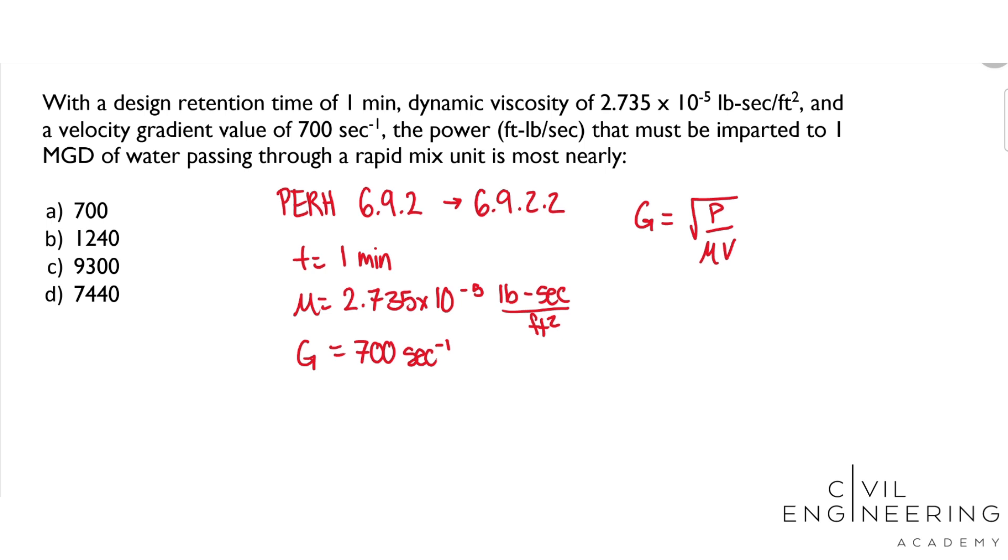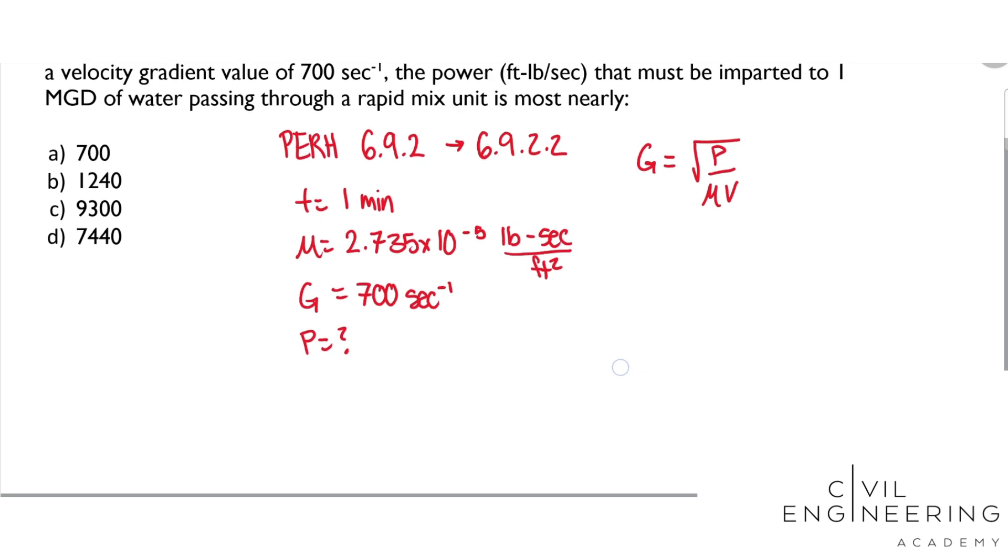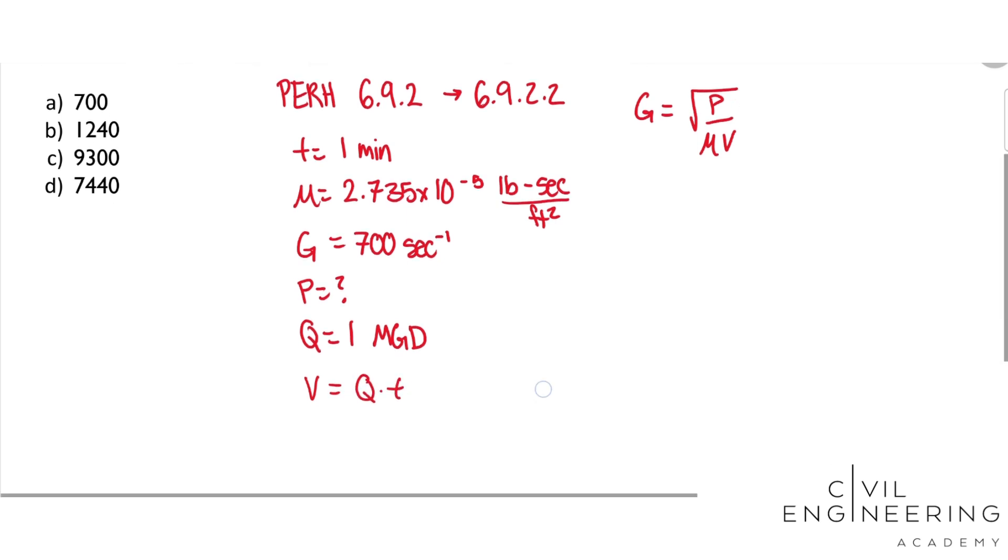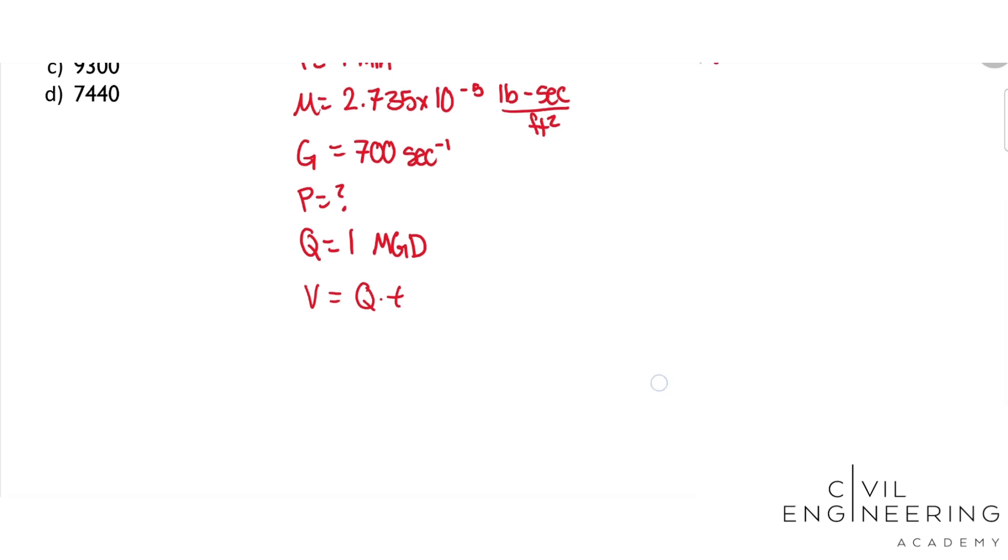And we need to find V, and we're given a flow of Q equals 1 million gallons per day. So we also need to find V. To find V, we have a Q and we have a time, so we pretty much just need to do Q times time to get our V.